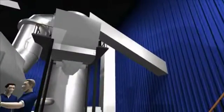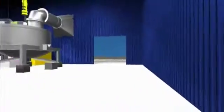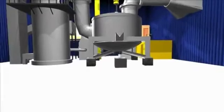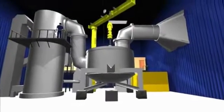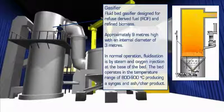We're now looking at the conveyor and feed hopper that delivers the feedstock to the fluid bed gasifier. The fluid bed gasifier processes refuse derived fuel and pre-treated commercial and municipal wastes.